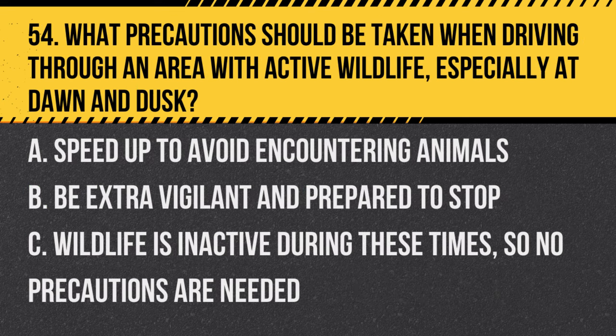Question 54. What precautions should be taken when driving through an area with active wildlife, especially at dawn and dusk? A. Speed up to avoid encountering animals. B. Be extra vigilant and prepared to stop. C. Wildlife is inactive during these times, so no precautions are needed. Answer: B. Be extra vigilant and prepared to stop. Dawn and dusk are peak times for wildlife activity, so drivers should be especially alert.